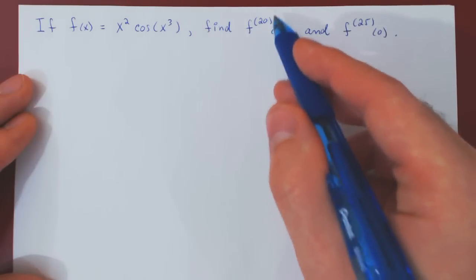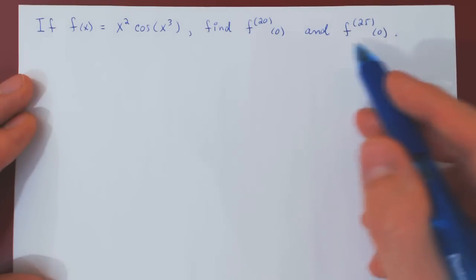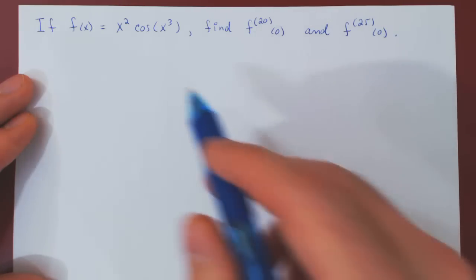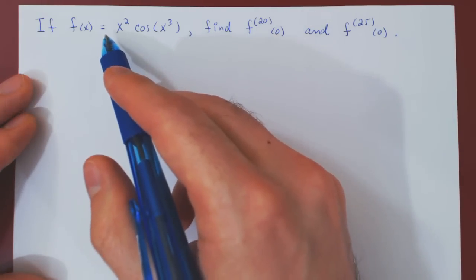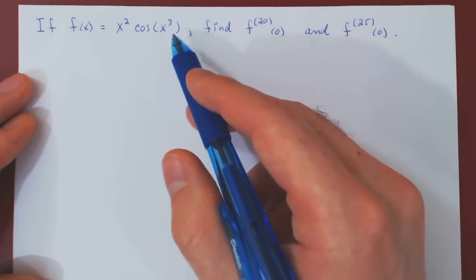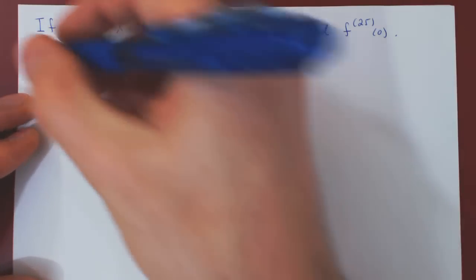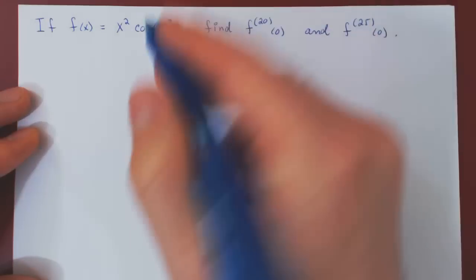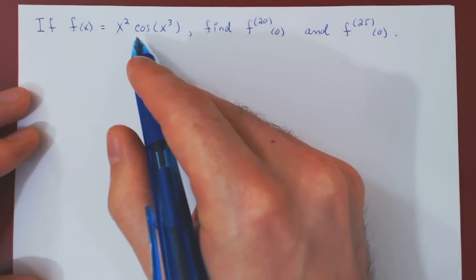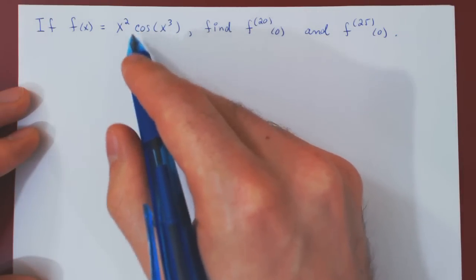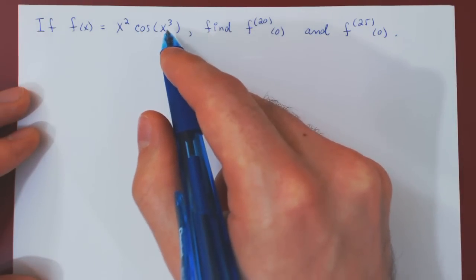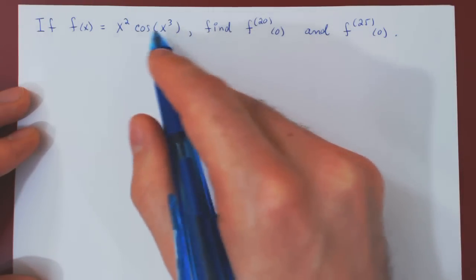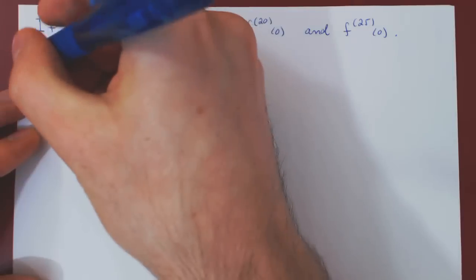Instead, we'll find these derivatives using a very subtle method — using the Maclaurin series of f of x. What we really need here is the Maclaurin series of cos of x, and then we'll be good to go.